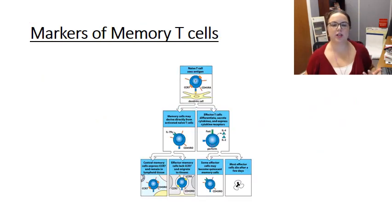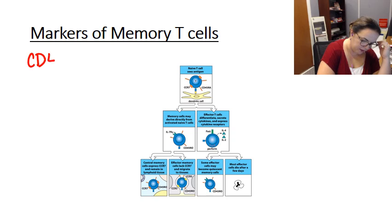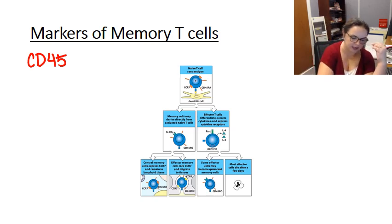So how can we differentiate an effector cell from a memory cell? Well, the answer is CD45. Now, CD45 is expressed in a variety of different forms, but it's expressed on naive cells, effector cells, and memory cells. However, there are these splice variants where certain segments are cleaved out of it. So there's different appearances for CD45.